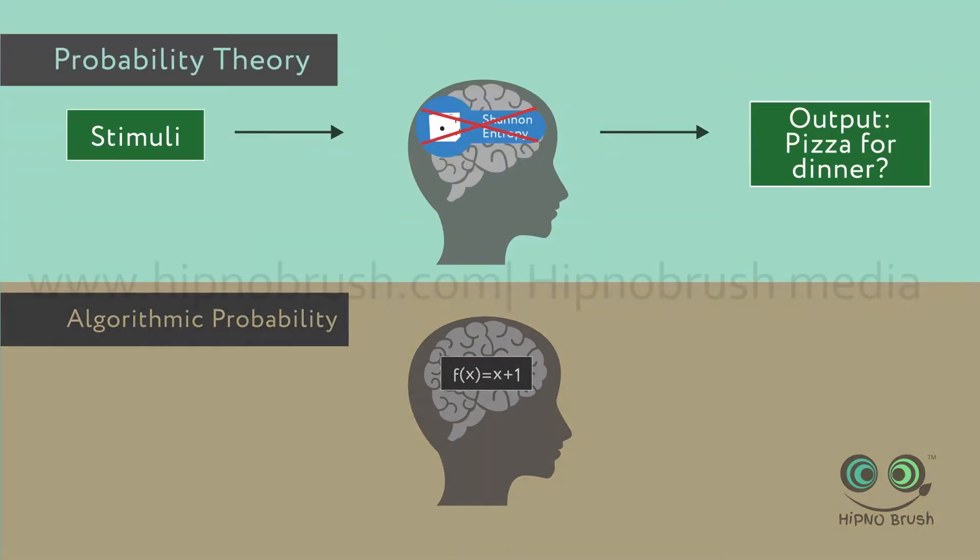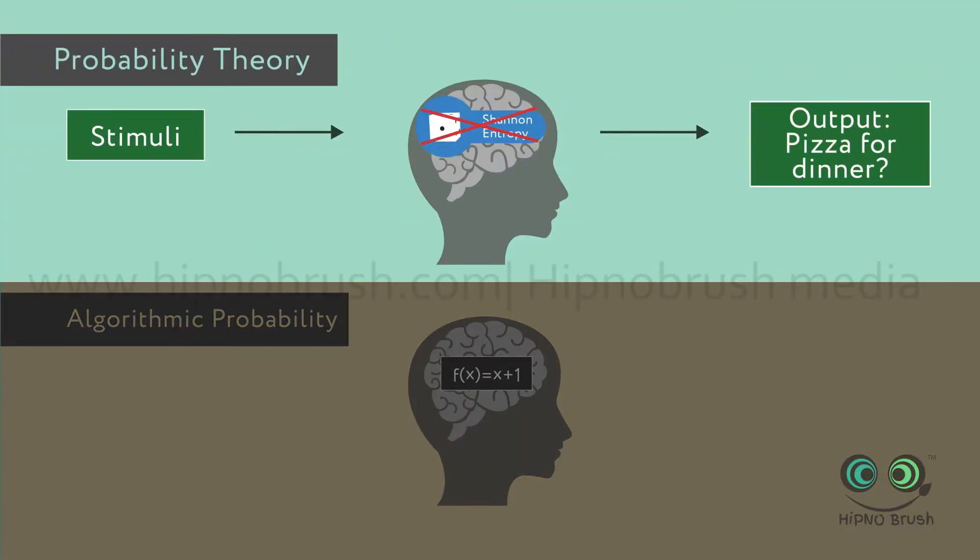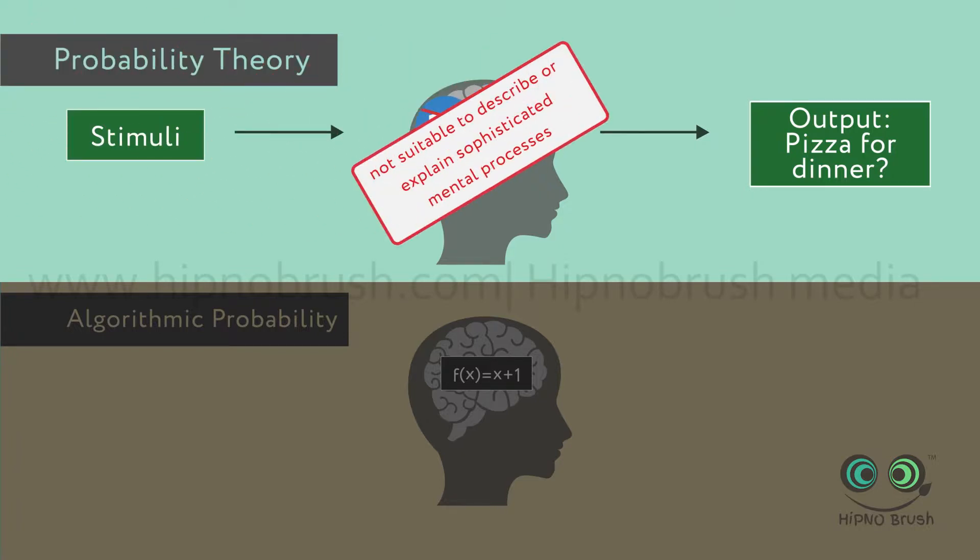This means that statistical tools such as Shannon entropy applied to inputs, outputs, and internal representations are not suitable to describe or explain sophisticated mental processes.